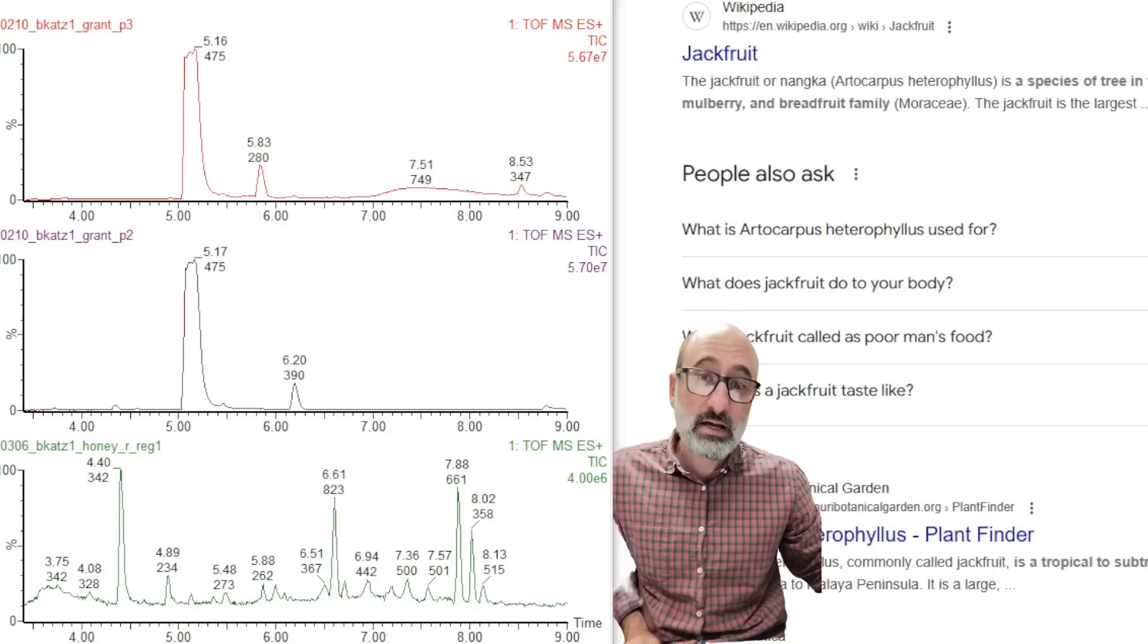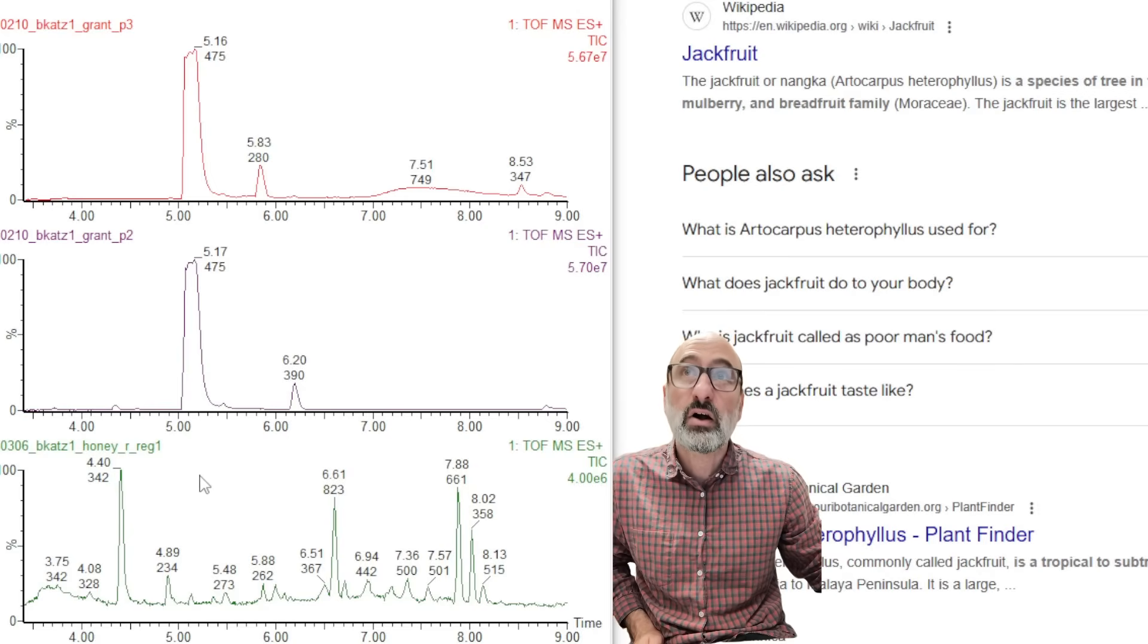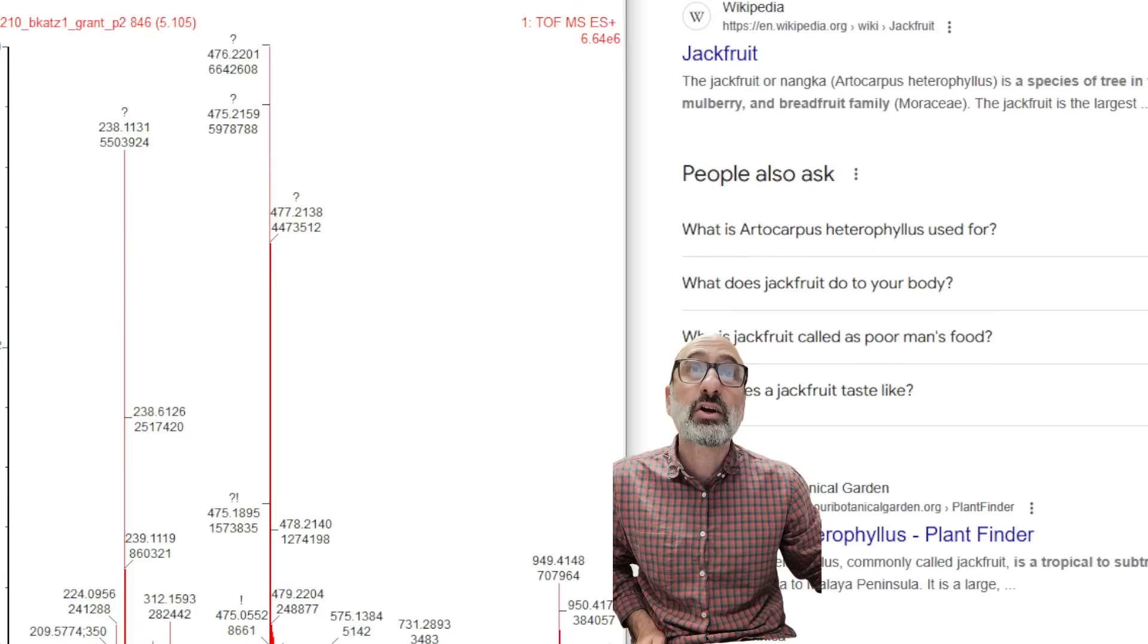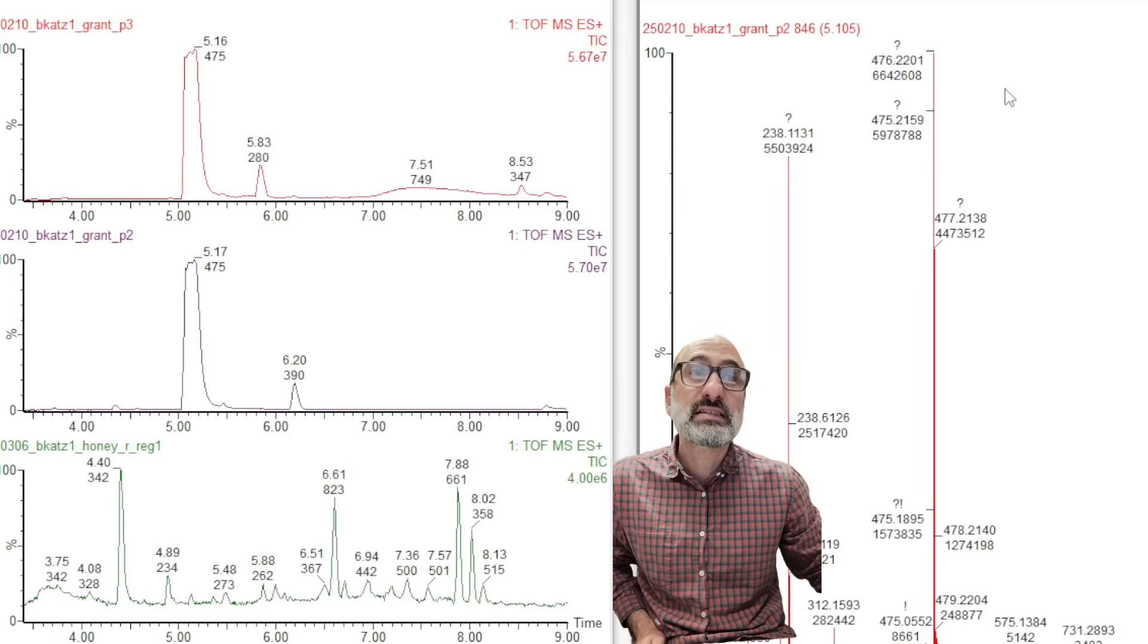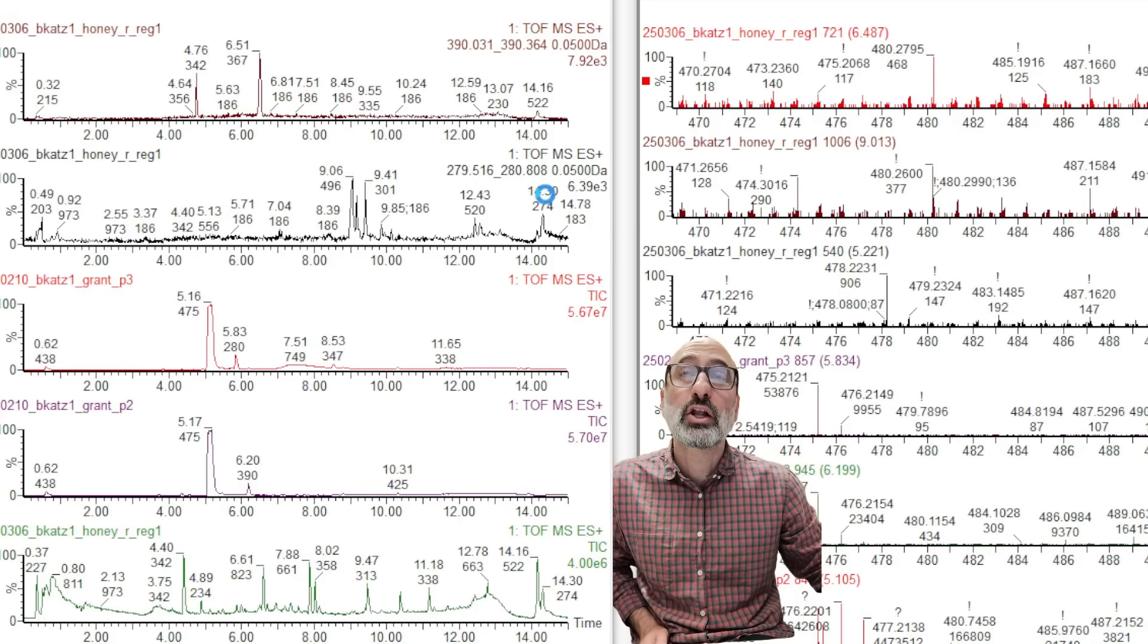All right, so to confirm or deny the myth of the Royal Honey packs from the gas station have just Viagra or another thing that would be in one of these ED supplements at the gas station. Here's the two other Grant Harding samples, this P2 and P3 supplements that he sent to me. You can see this huge 475 mass right here. 476 is the Viagra. That's the Viagra. Is that in the Royal Honey anywhere? Let's take a look.